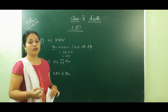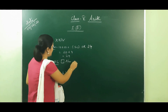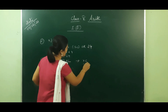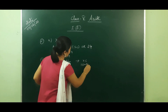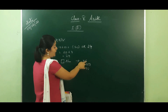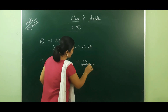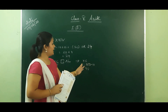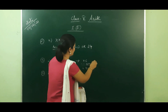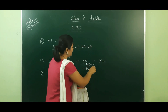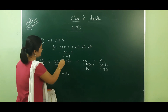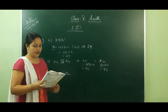Question number three asks you to compare numbers — whether greater, less, or equal. For example, XC: X is before C (100), so it means subtraction — 100 minus 10 equals 90. For the other number, XL: 50 minus 10 equals 40. So 90 is greater than 40, and you put the greater than symbol accordingly. Solve the remaining questions in the same way.